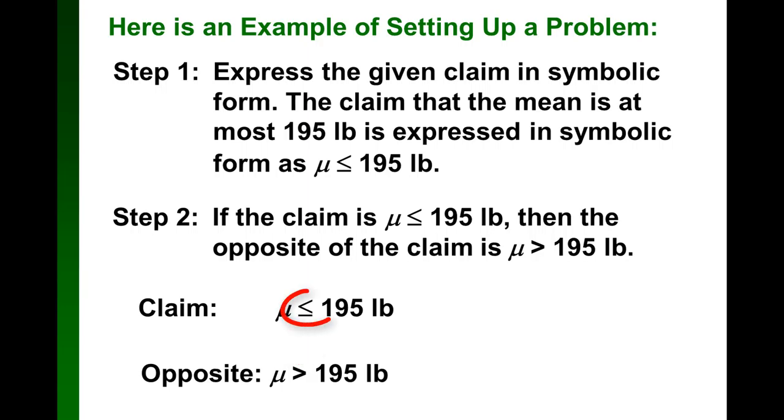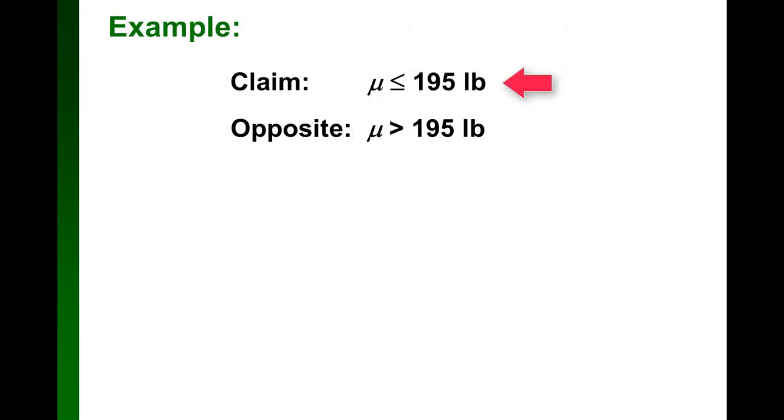For a less than or equal to symbol, the opposite would be greater than, because the arrow points the other direction. Since the claim had an equal sign, the opposite will not have an equal sign. Now that we have the claim and the opposite of the claim written symbolically,